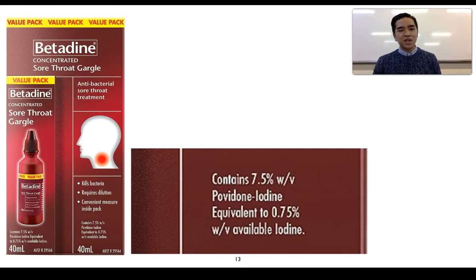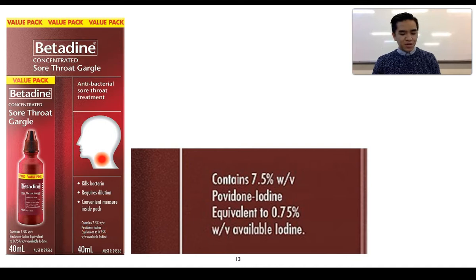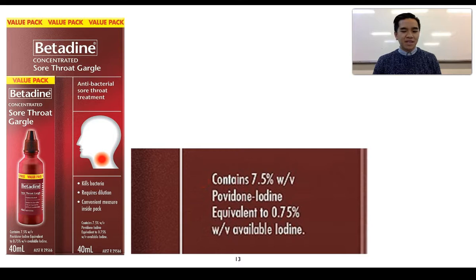This image shows a Betadine sore throat gargle. Zooming in, it shows that it contains 7.5% weight per volume of povidone iodine, which effectively means it contains 7.5 grams of povidone iodine per 100 mils of solution.